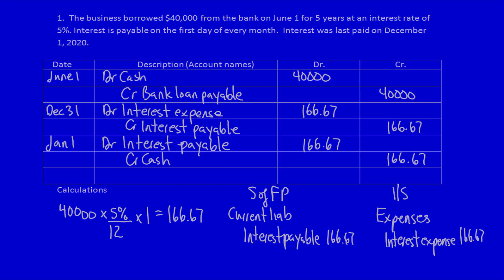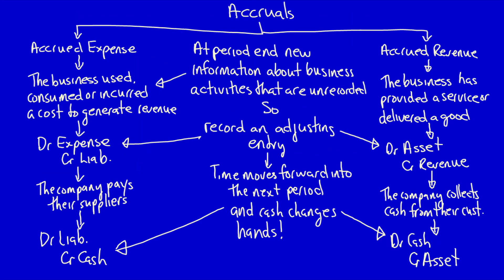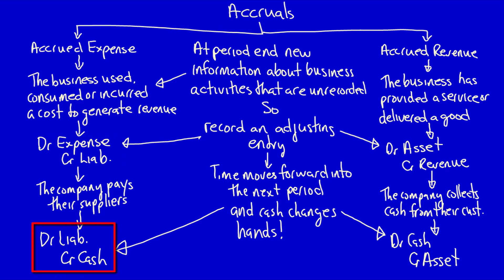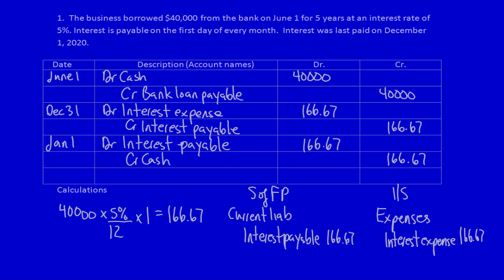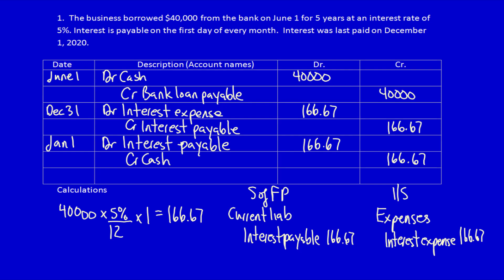Did we follow our accrual flowchart? Accrued expenses: the business records a new piece of information at the end of the year — debit the expense, credit the liability. That's exactly what we did: we debited interest expense, credited interest payable. The company then pays their supplier in the next period — the supplier was the bank because they supplied us with cash to use. So that would be a debit to interest payable and a credit to cash. Followed the flowchart perfectly. Accrued expense adjusting entry for interest.